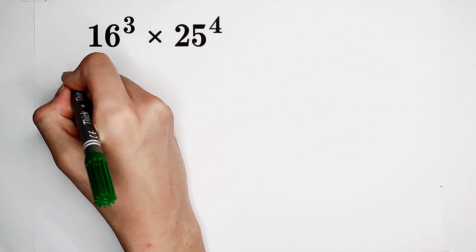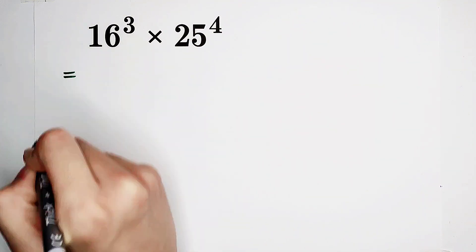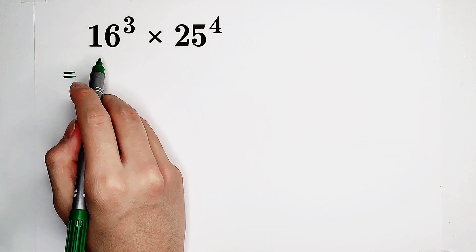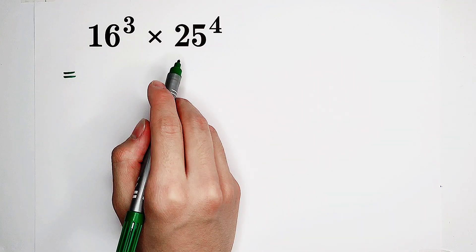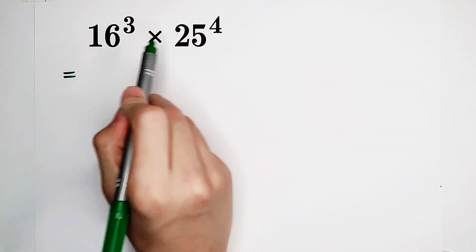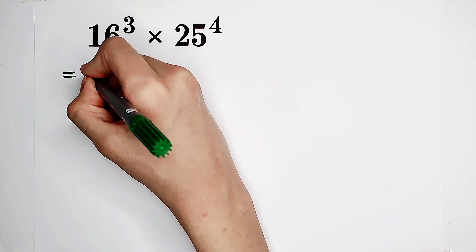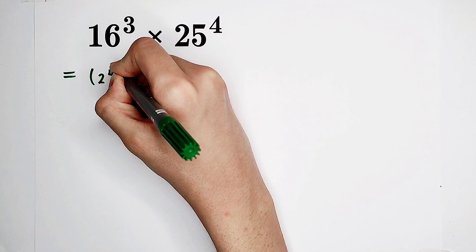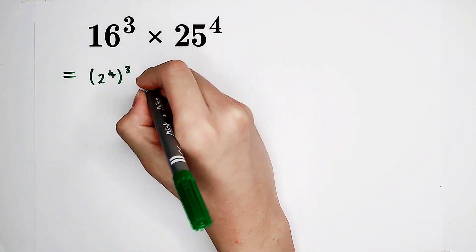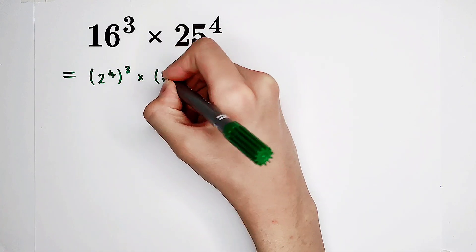The first method is... Firstly, 16 and 25 are powers. They're both perfect squares. And 16 is also 2 to the power of 4. 25 is 5 squared.